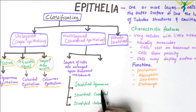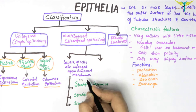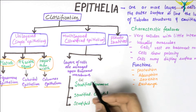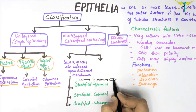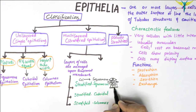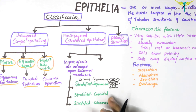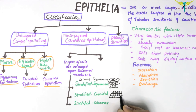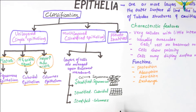In stratified squamous epithelium, the deeper layers consist of columnar cells, but proceeding towards the surface they become increasingly flattened or squamous in shape, with the nuclei visible and the basement membrane below. In stratified cuboidal epithelium, the surface cells are cuboidal in shape. In stratified columnar epithelium, the surface cells are columnar in shape, with the nuclei positioned basally.